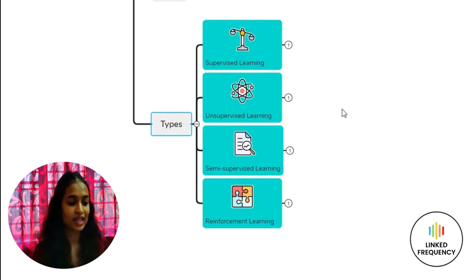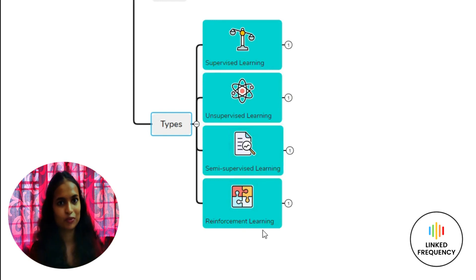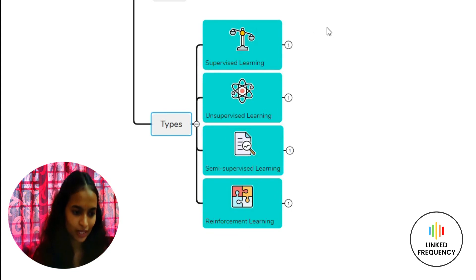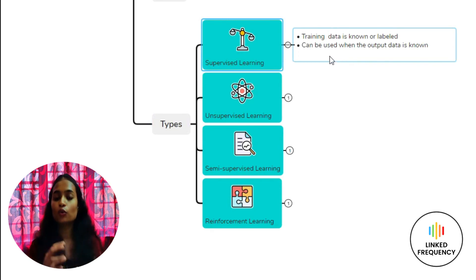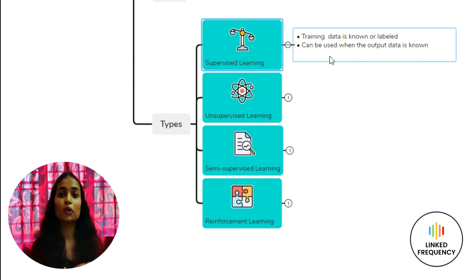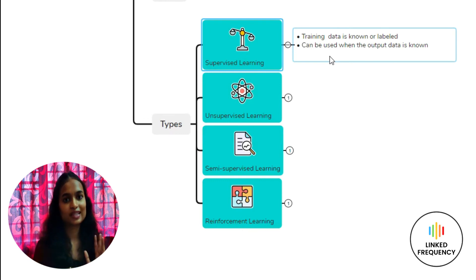There are four different types of machine learning. The first is Supervised Learning. As the name indicates, it operates under supervision — the training dataset is labeled and the outcome is already known. For example, if you want to classify images as a dog or a cat, you already know the outcome; you feed unforeseen data and expect it to categorize as cat or dog. Input is labeled and output is already known.